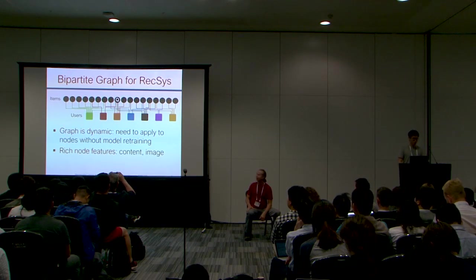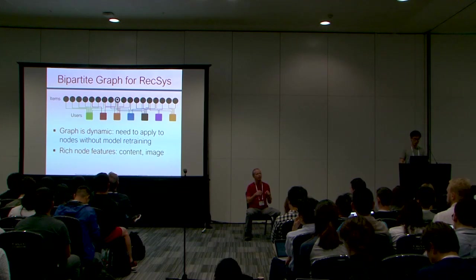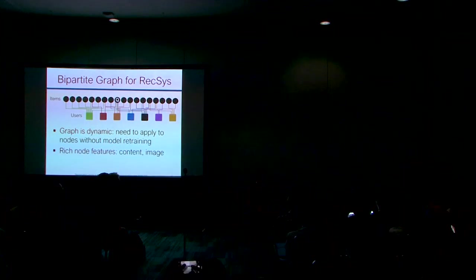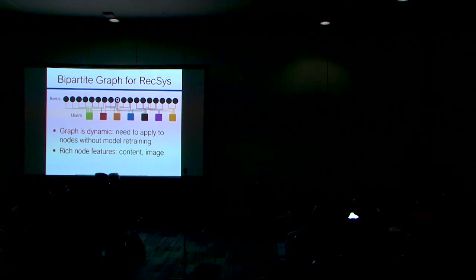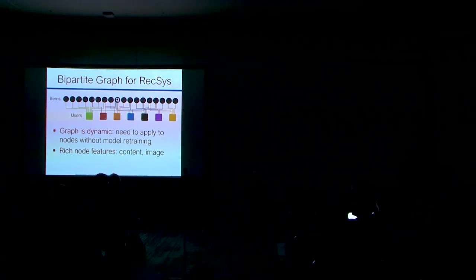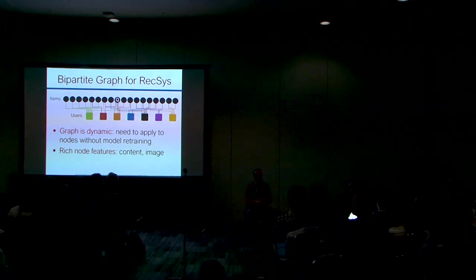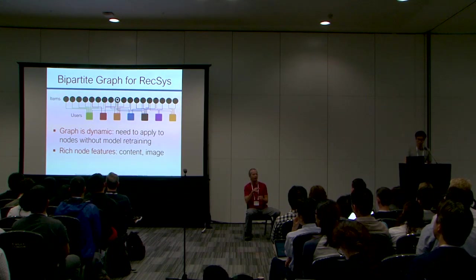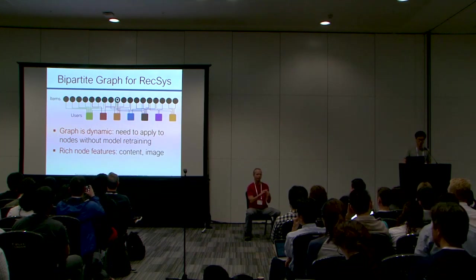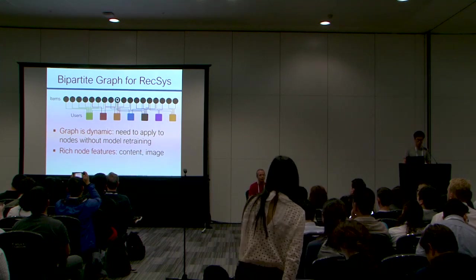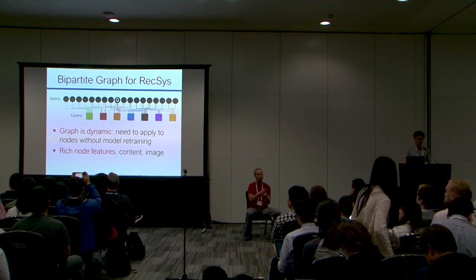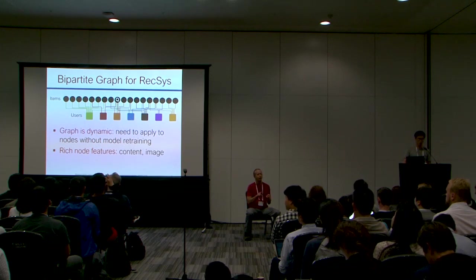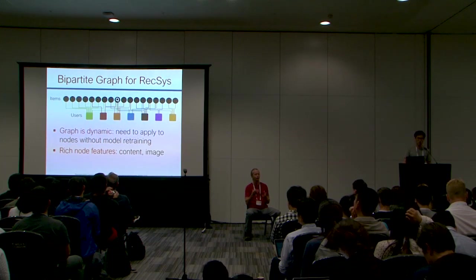Recommender systems can be modeled by the structure of a bipartite graph. On one side we have a set of users, and on the other side we have items that we want to recommend to users. The connections represent the historical interactions between users and items. An important feature of this bipartite graph is that it is dynamic — there can be new users coming in and users that are no longer active — and we want to be able to do recommendation without retraining the model too often.